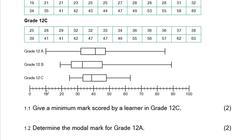Question 1.1: Give the minimum marks scored by a learner in 12c. The minimum would be the lowest value, and for 12c, the lowest is 25.